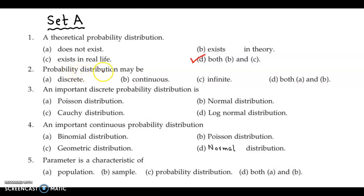Second question, probability distribution may be discrete, continuous, infinite, both A and B. Now probability distribution, if it is related to a discrete random variable, then it could be discrete. Else it could also be continuous if we are dealing with continuous random variables. So probability distribution could be discrete which we call PMF and continuous which is also called PDF. The correct answer is option D, both A and B.